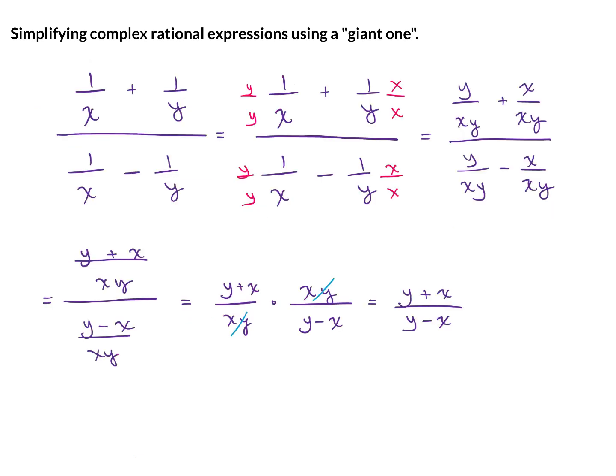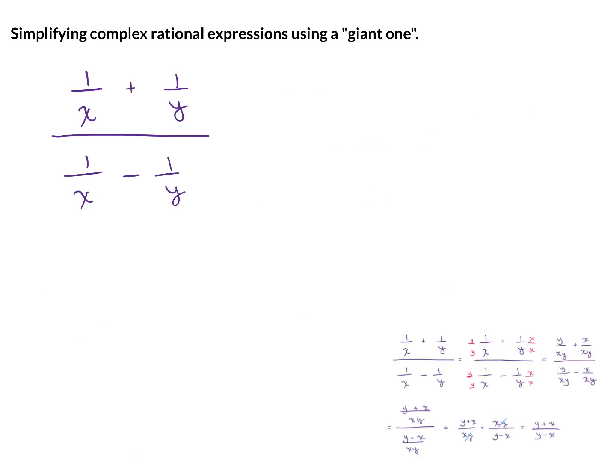In this problem, I'm illustrating the traditional way that you simplify this complex rational expression. Now I'm going to show you the short way. First, you find your LCD of all 4 fractions. Our LCD is going to be xy. And you multiply the entire fraction by a giant 1, xy.